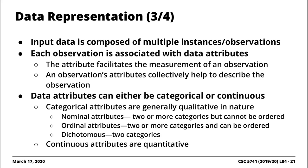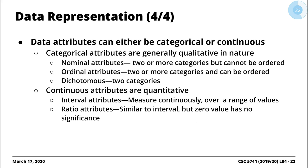You also have continuous attributes. If you compare continuous attributes to categorical attributes, with categorical values you're more or less dealing with qualitative or descriptive information, but with continuous attributes you're dealing with quantitative data — numbers for the most part. The two types are interval attributes and ratio attributes. Interval attributes involve just a continuous range of values. Ratio attributes are similar to interval attributes with one key difference: zero has no significance for ratio attributes — for example, if someone's weight is zero kg, it has no meaning.